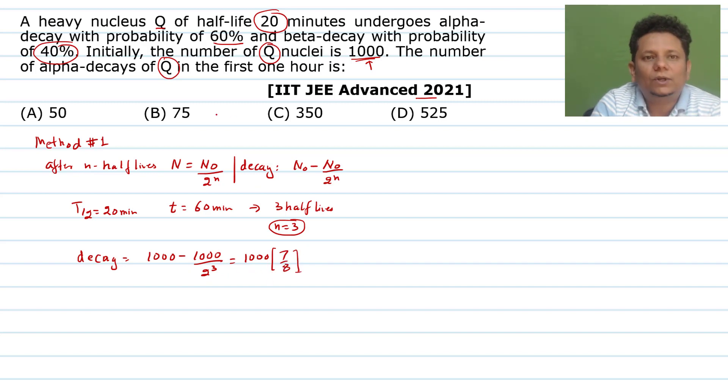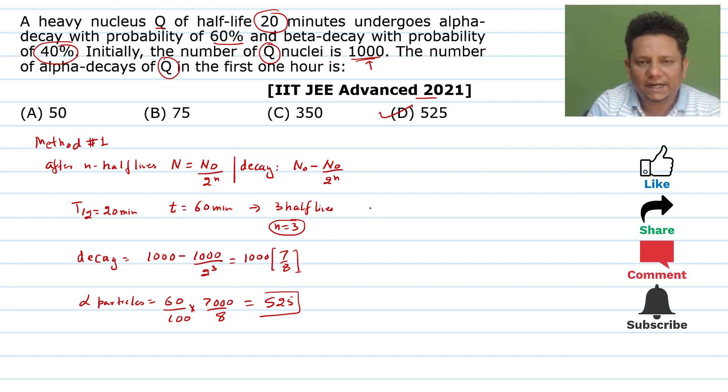Now, this is the total Q that decayed. Out of those, how many alpha particles are formed? Your alpha particles will be equal to 60 percent, 60 by 100 multiplied by 7000 by 8. This is your final answer. Now to calculate this, cancel the zeros, and when you calculate this, your answer will be 525. So that means option D, 525, this will be the right answer.